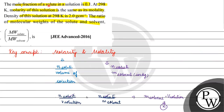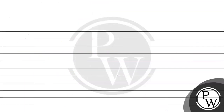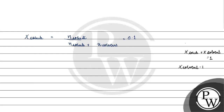The question mentions that mole fraction of a solute in a solution is 0.1. So mole fraction of the solute equals number of moles of solute divided by moles of solute plus moles of solvent, which equals 0.1. We also know that mole fraction of solute plus mole fraction of solvent equals 1. Since mole fraction of solute is 0.1, mole fraction of solvent will be 1 minus 0.1, which is 0.9.